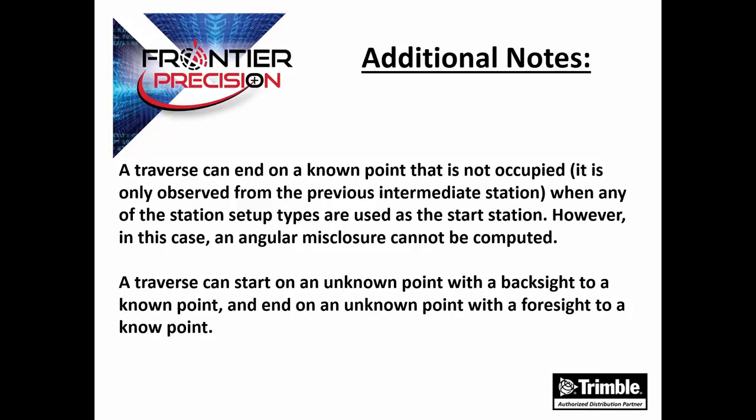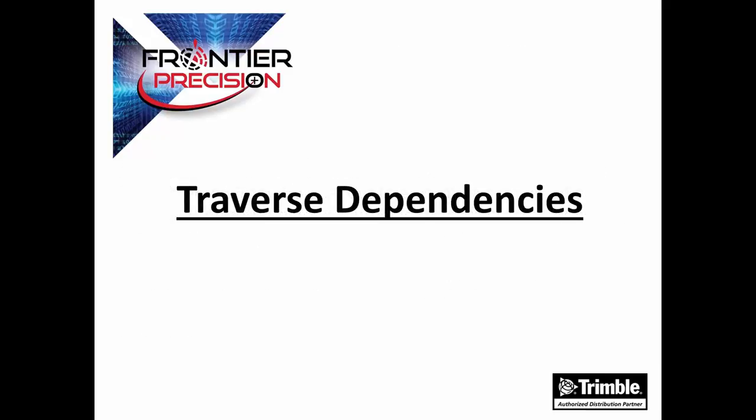A traverse can also start on an unknown point with a backsight to a known point, and end on an unknown point with a foresight to a known point. And lastly, some traverse dependencies: when creating or editing a traverse, an intermediate station in one traverse can also serve as the first or last station in a second traverse. This makes the second traverse dependent on the first one, because the adjustment of the first traverse puts traverse-adjusted coordinates on all the intermediate station points, qualifying any of them as a start and end station for a second traverse. When traverses are automatically adjusted, the software recognizes these dependencies and adjusts the traverses in the proper sequence. If you are adjusting traverses manually, you need to keep dependencies in mind and adjust traverses in the proper sequence.